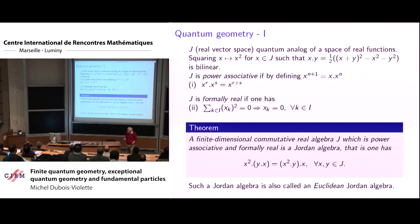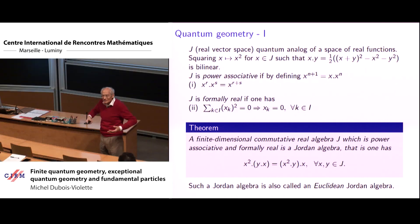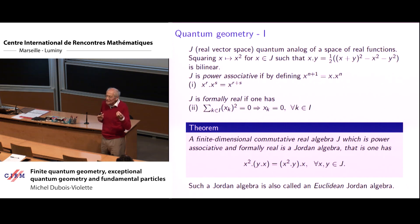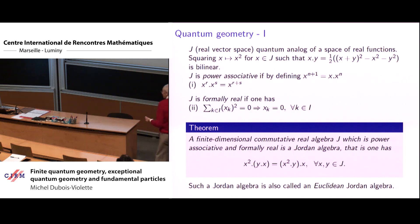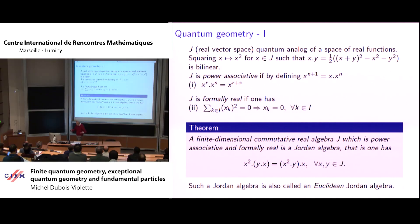If you want to have a quantum geometry you start with a real vector space which you want to be the space of your observable algebra, and you want to have spectral theory. Spectral theory means that you can take real functions of each element. In finite-dimensional space polynomial functions are sufficient, so you have to be able to define polynomial functions of any element and have the result be another element of this vector space.